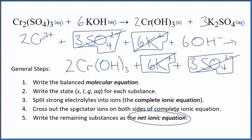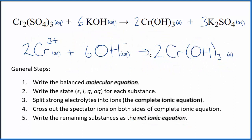What's left is the net ionic equation for Cr2(SO4)3 plus KOH. This is the balanced net ionic equation for chromium(III) sulfate and potassium hydroxide.